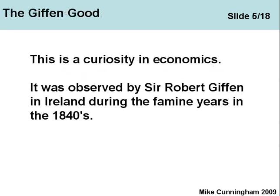The first one we'll look at is called the Giffen Good — this is a curiosity in economics, a very rare curiosity. It was really only observed by Sir Robert Giffen in Ireland during the famine years of the 1840s. At that time Ireland suffered from a major natural disaster when the potato crop failed, and literally millions of people were affected. Many people immigrated and many people starved to death. During this period, Giffen observed what was happening to the demand for potatoes.